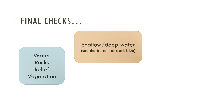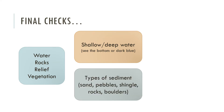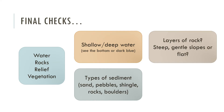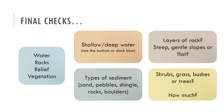Once you've got that, look at the water. Is it shallow or deep water — can you see the bottom or is it dark blue? What types of sediment can you see? Is it sand, pebbles, shingle, rocks or boulders? Are there layers of rock? Is the land steep, on gentle slopes or flat? And what type of vegetation can you see — shrubs, grass, bushes or trees, and how much of it?